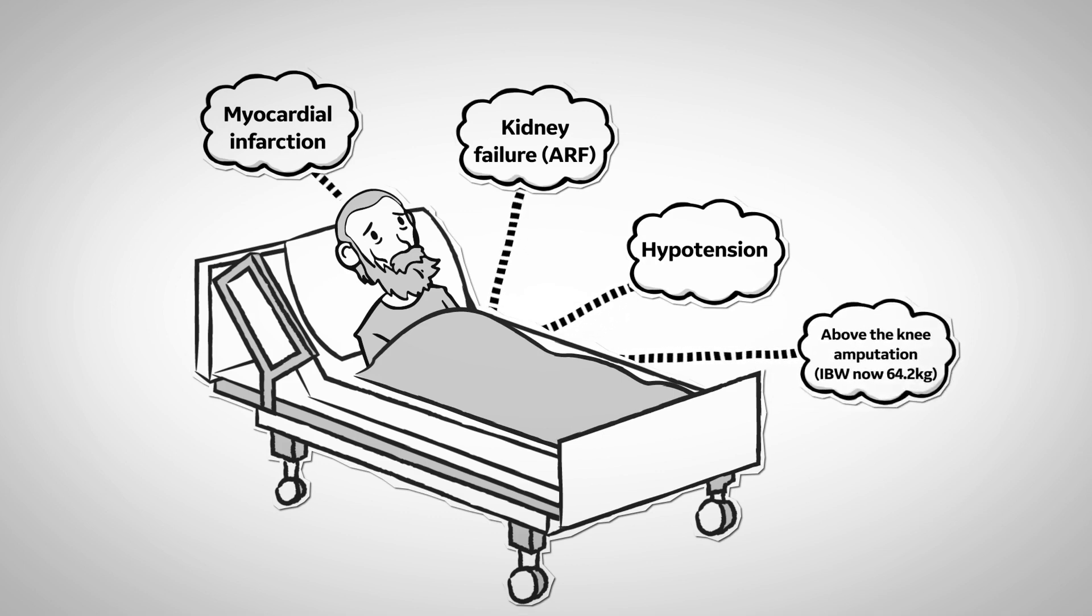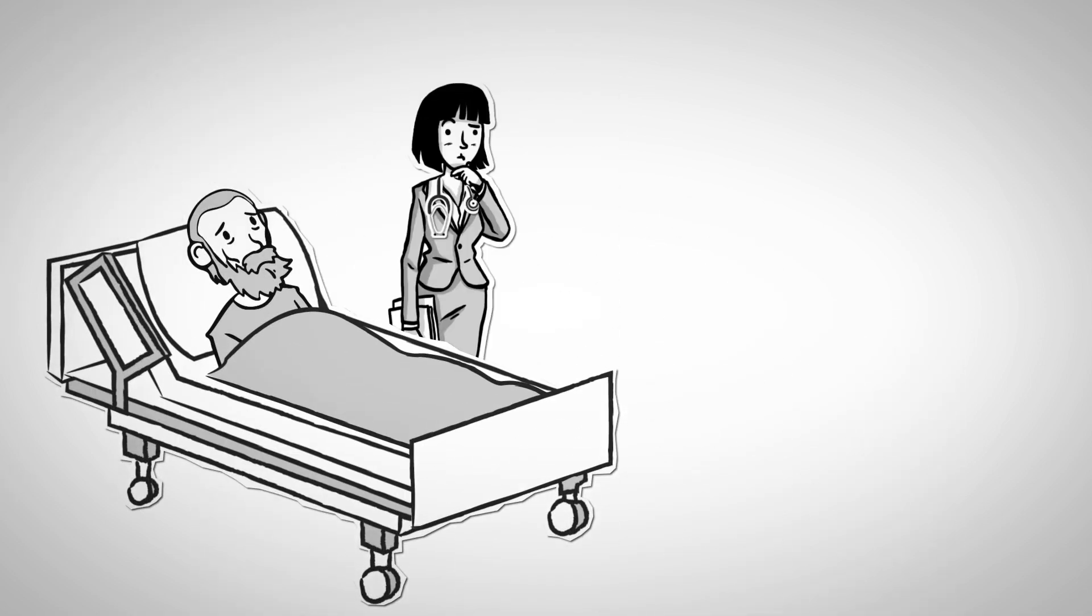After the amputation, we need to adjust his ideal body weight and that is now 64.2 kilograms. I think it's obvious that this patient had quite a bit going on and that's exactly why he was a good candidate for indirect calorimetry.